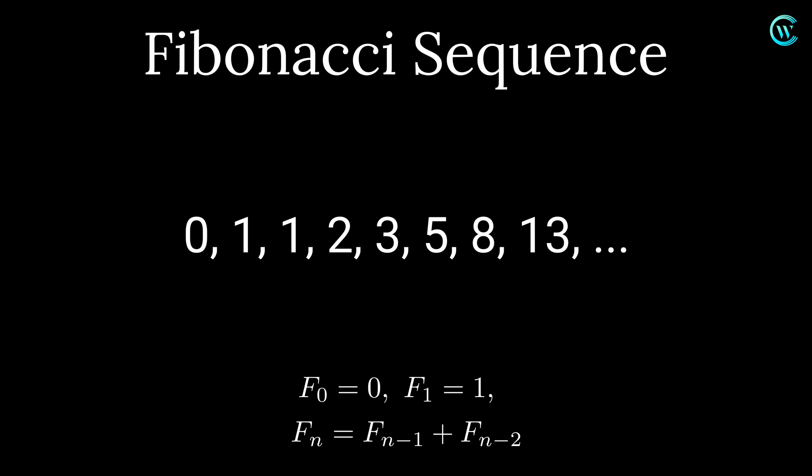The Fibonacci sequence is a series of numbers ordered such that each successive number is the sum of the previous two numbers in the sequence. The first term of the Fibonacci sequence could be considered to be either 0 or 1, and the second term is 1.